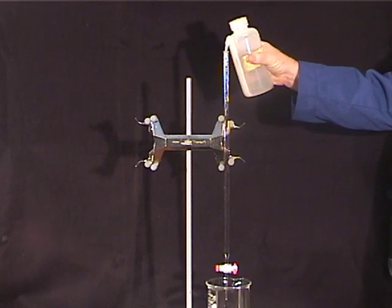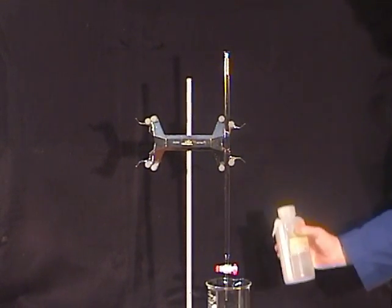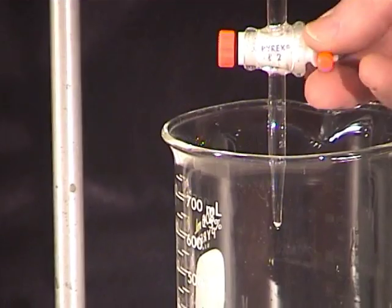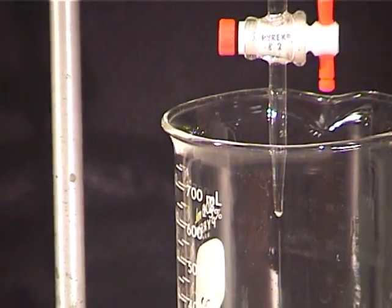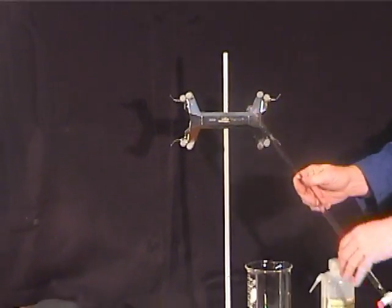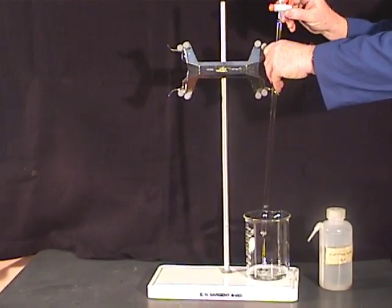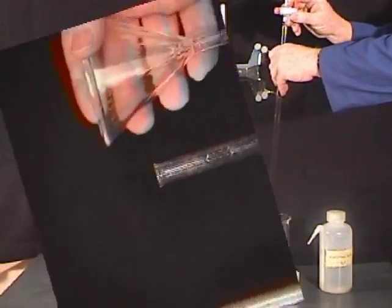The burette is a long calibrated tube fitted with a stopcock valve and nozzle. To use the burette, first rinse it with deionized water by filling and emptying several times. The rinse water must be flushed out so that its residue does not dilute the reagent to be used in the tube.